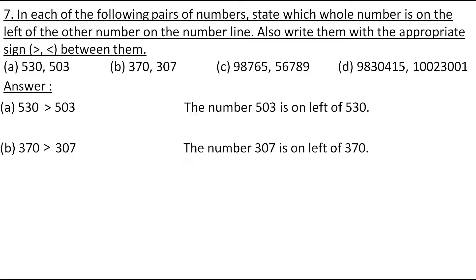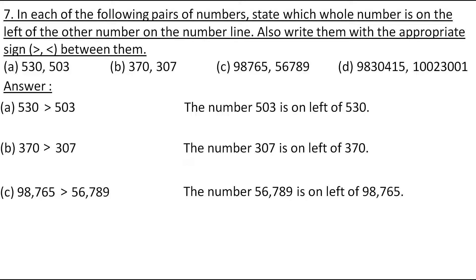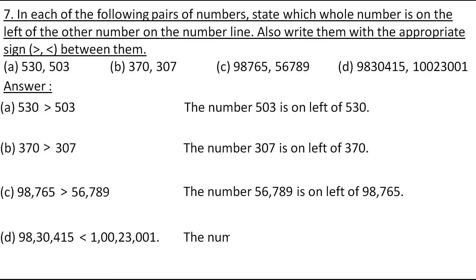The third pair is 98,765 and 56,789. The number of digits is the same, but the highest place digits are different — 98,765 has the higher digit in the highest place. Therefore, 56,789 is on the left of 98,765. The fourth pair is 98,30,415 and 1 crore 23,01. Here the number of digits are different — 98,30,415 has 7 digits and 1 crore 23,01 has 8 digits. The number with more digits is always greater, so 98,30,415 is on the left of 1 crore 23,01.